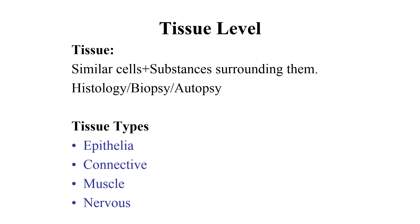Tissues are defined as similar cells and the extracellular substance around them. Cells performing the same function along with their extracellular substance are collectively called a tissue. There are about four types of tissues, and they are classified on the basis of cell shapes and the type of extracellular material.